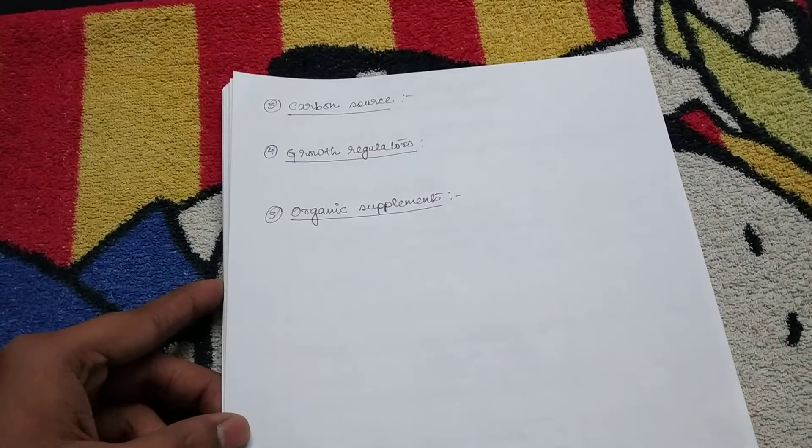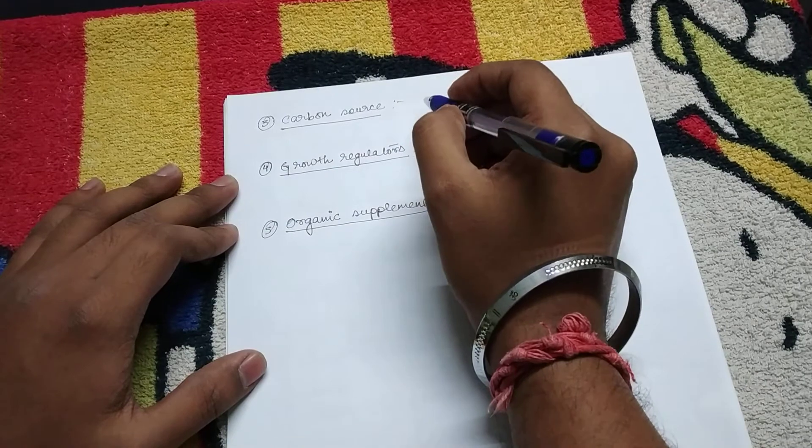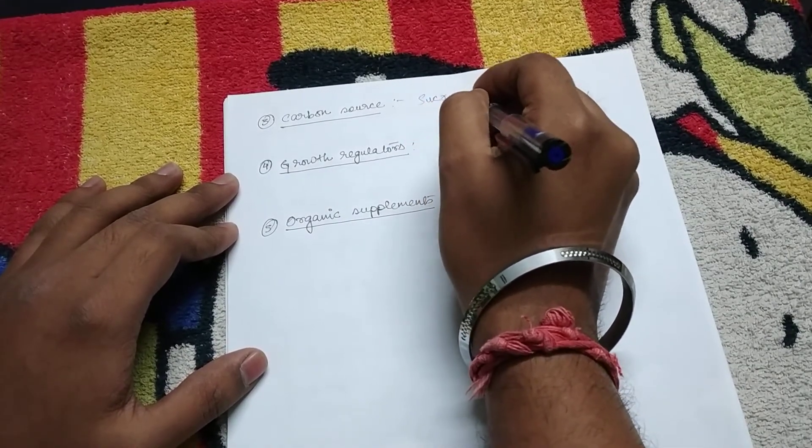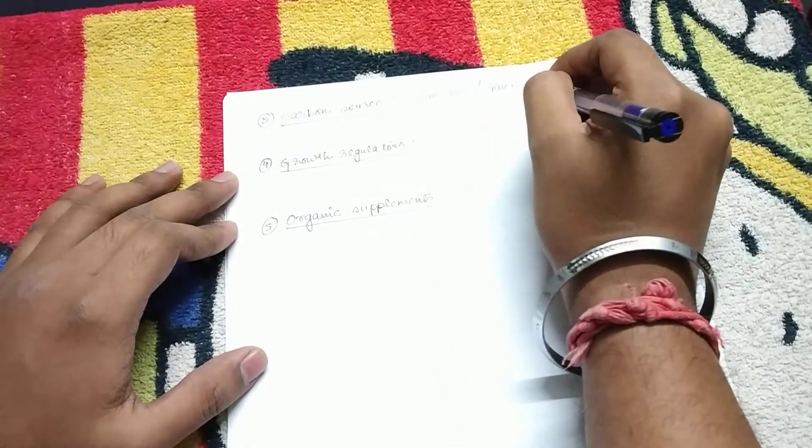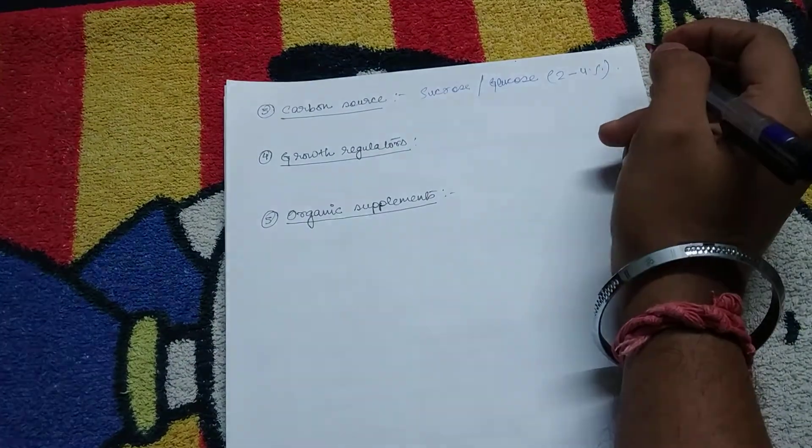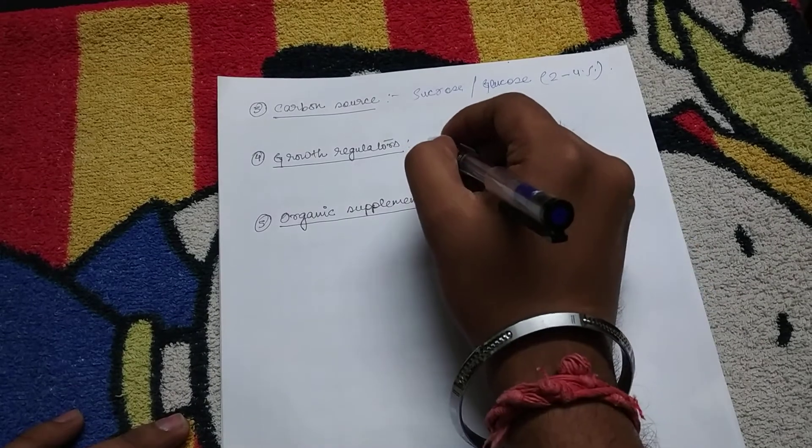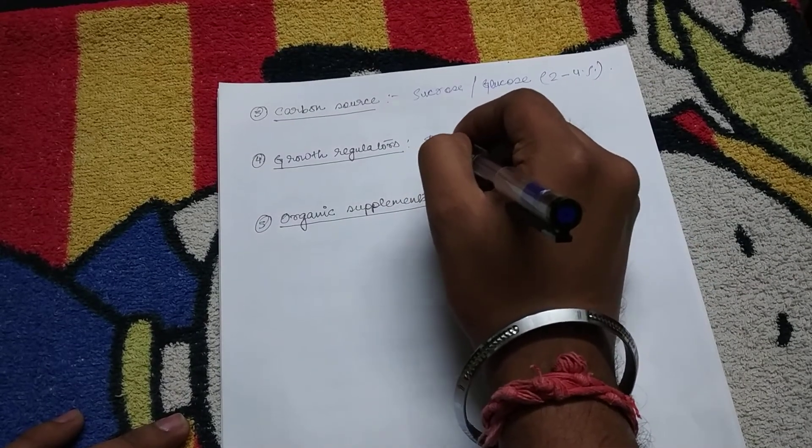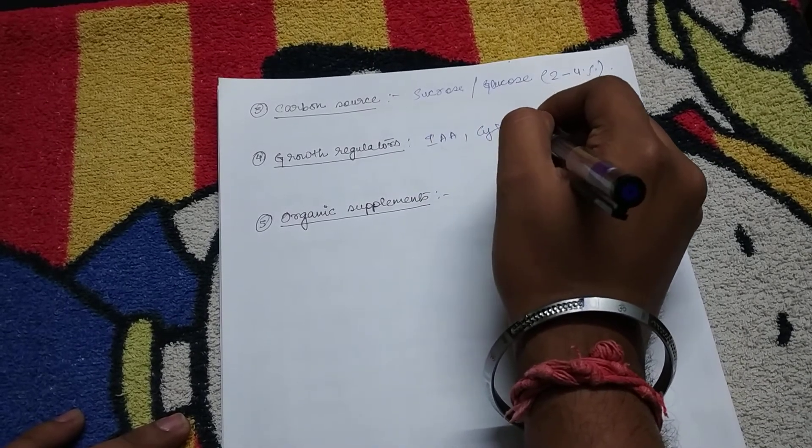The next nutrient medium is carbon source. The carbon source is basically sucrose or glucose which is 2 to 4 percent. Now growth regulators we have earlier studied, that is IAA and cytokinins, are required.